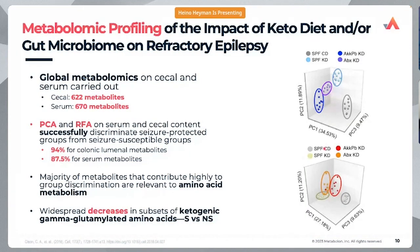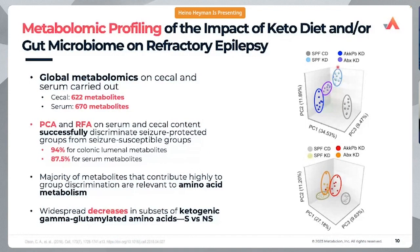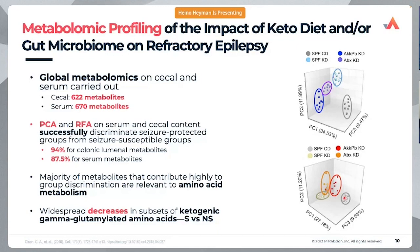One of the first analyses done was principal component analysis, which clearly showed separation from a normal chow diet to different situations — antibiotic treatment with keto diet, or these mice without additional probiotics just on a keto diet — clearly different from the control diet in the cecal samples. The same separation observed on the cecal side was also observed systemically in the serum, showing that what is happening in the gut translates well to the systemic side.